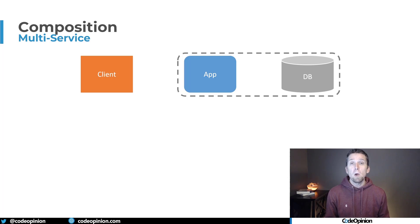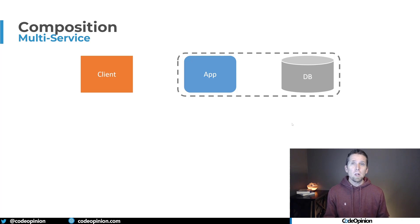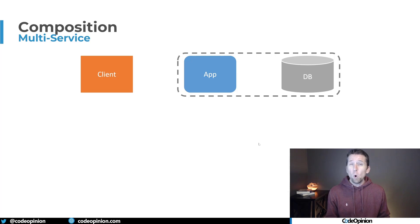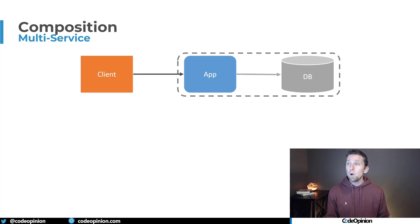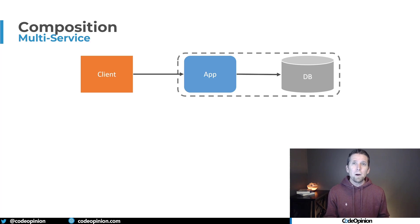When we're working within a monolith that has a single database, this isn't really much of an issue. We have our client — this could be a browser doing server-side rendering, or a SPA making a call to an HTTP API. Everything is within a single database, which means we can make multiple queries, get all the data, and compose it together in memory.